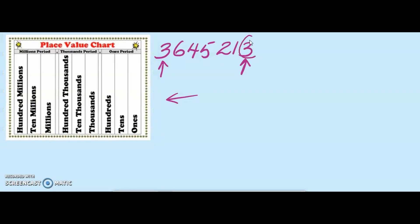I'm going to start with this 3 and insert it into my ones column. Then I'm going to insert my 1 into my tens column. My 2 goes into my hundreds column. My 5 into my thousands column. My 4 goes into the tens of thousands column. 6 goes into the hundreds of thousands column. And finally, the 3 goes into my millions.